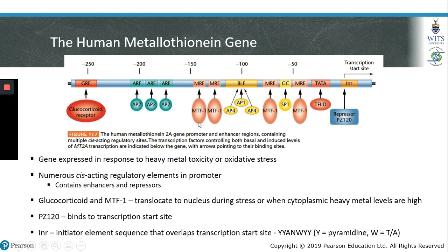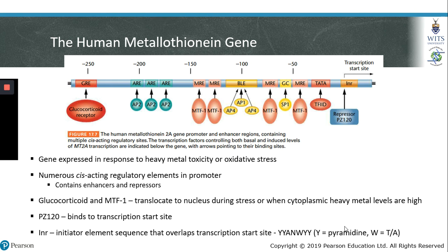In addition to transcription factors that can bind to the promoter region, the metallothionein gene also contains a binding site for a repressor called PZ120. PZ120 is able to bind to the transcription start site and prevent transcription of the gene. The initiator element, INR, is also located in the metallothionein gene. The initiator element is a sequence that overlaps with the transcription start site and has a consensus sequence of YYANWYY — where Y stands for a pyrimidine (thymine or cytosine), N stands for any nucleotide, and W is either a T or an A — followed by two more pyrimidines.